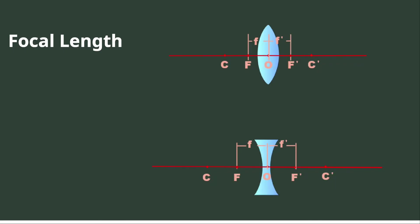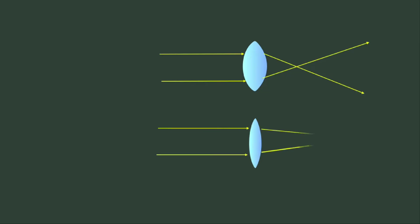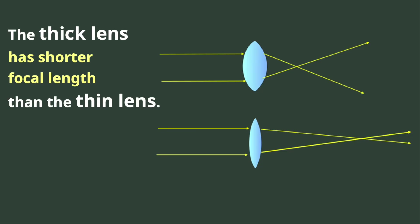The focal length of the lens depends on its curvature. A light ray passing through a thick lens is refracted more compared to the light ray passing through a thin lens, which undergoes less refraction. The parallel rays incident to the thick lens are converged at a shorter distance, while the same kind of rays passing through a thin lens converge at a longer distance. Thus, the thick lens has a shorter focal length than the thin lens.